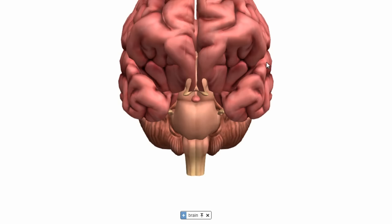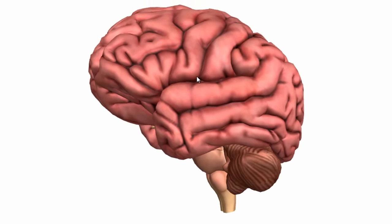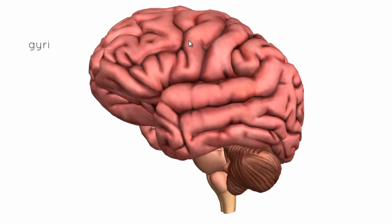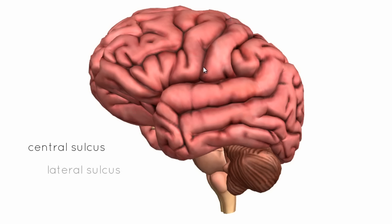Looking at the outside of the cerebral hemisphere, you can see grooves and ridges. The ridges are called gyri and the grooves are called sulci. Two important ones to remember are the central sulcus and the lateral sulcus. These two sulci are used to separate the functionally important lobes of the brain, and I'll do another tutorial covering all the different grooves and ridges.